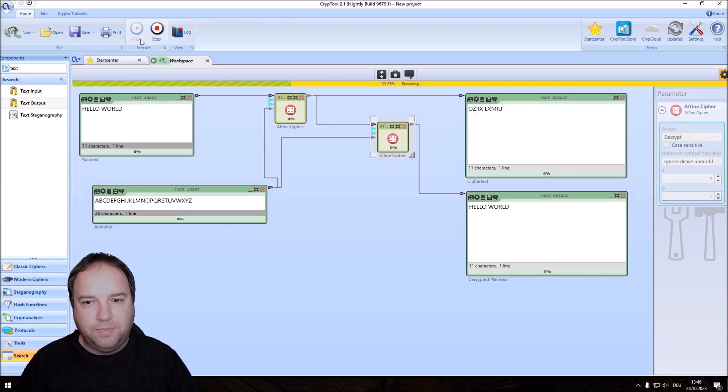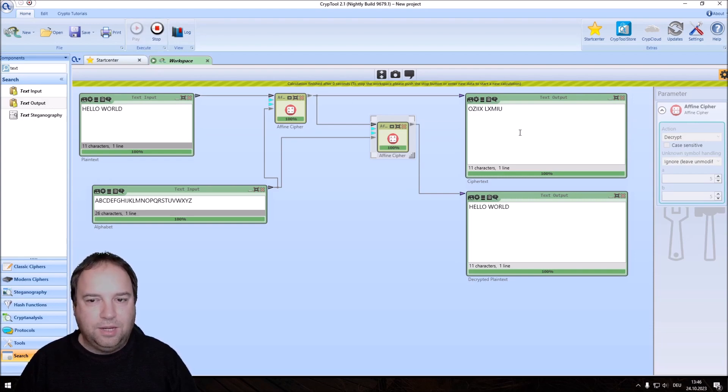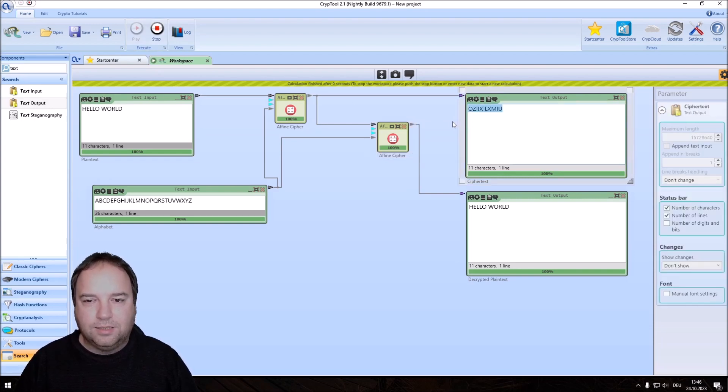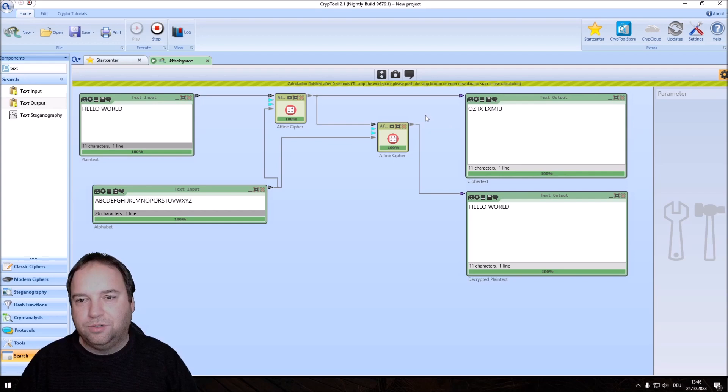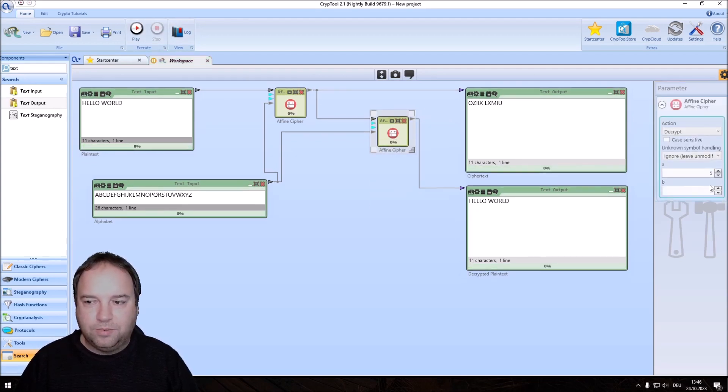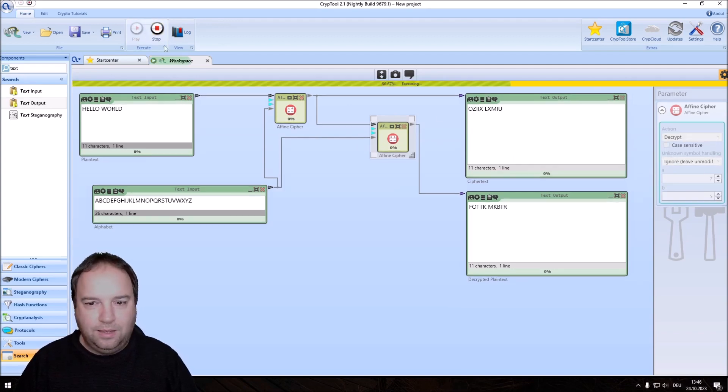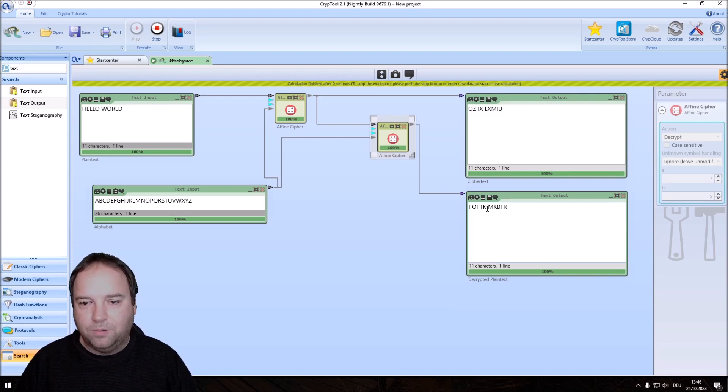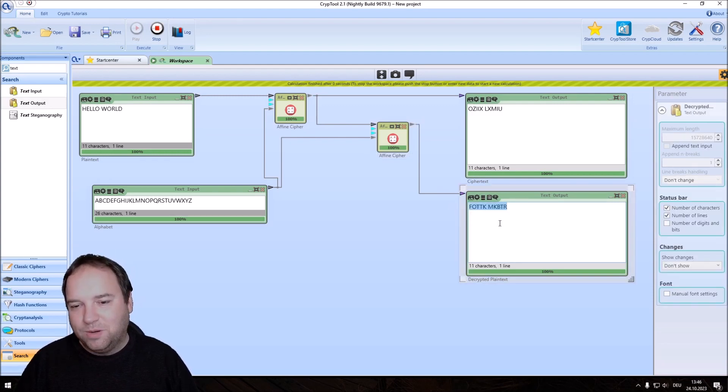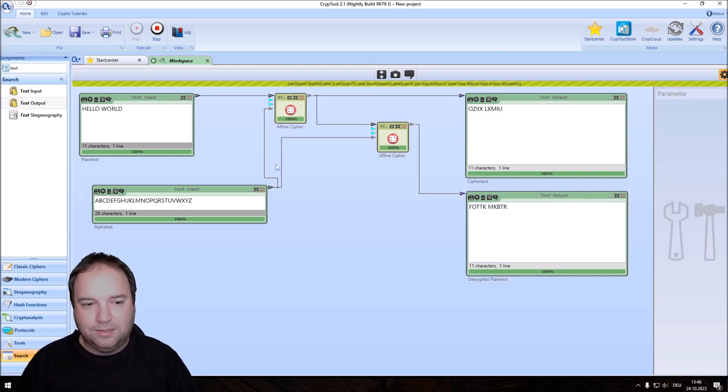And I change the second component to decrypt. When we now start the workspace, you can see that we get our same ciphertext that I have shown you in the slides. And clearly, when we decrypt using a wrong or a different number here, this won't work in the way we would like. We won't get our plaintext.